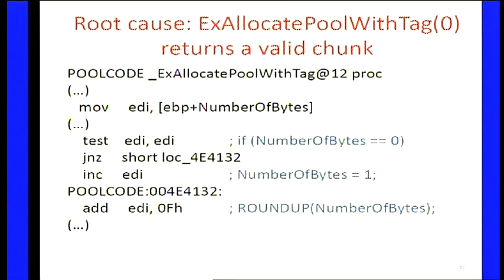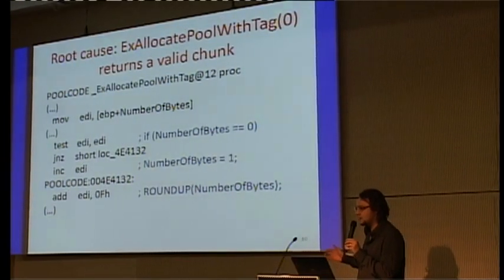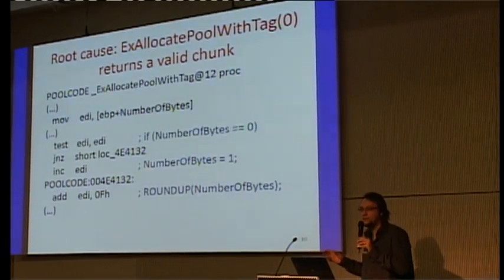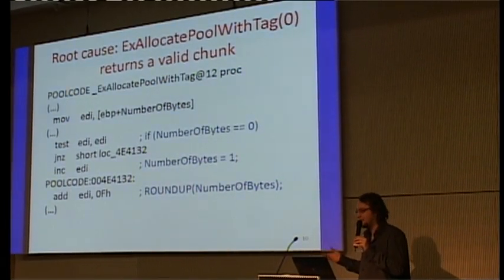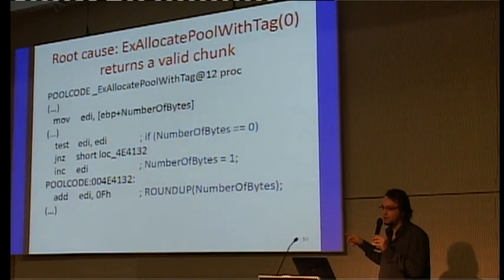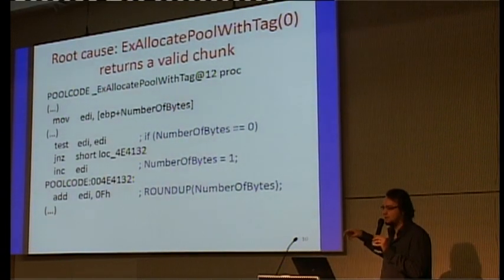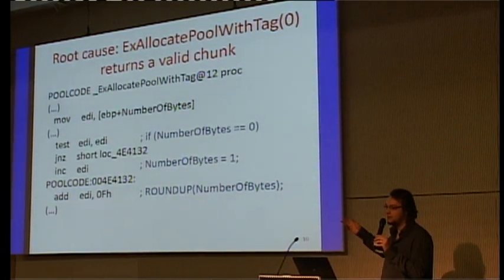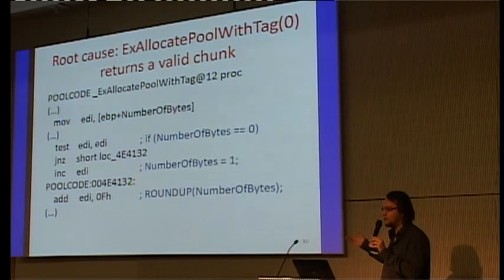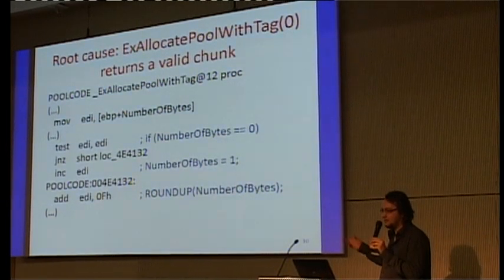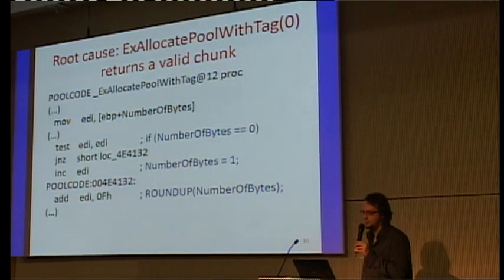So if you do a zero allocation, sometimes it's not a bug. If you don't touch the pointer, nothing happens. If you touch memory below the 16-byte threshold, nothing happens. However, if you dereference a field of a structure beyond the 16-byte offset, that's where you start to have memory corruption.